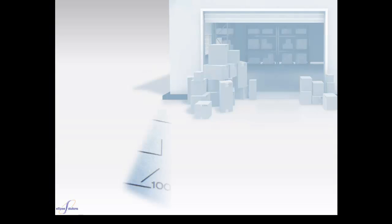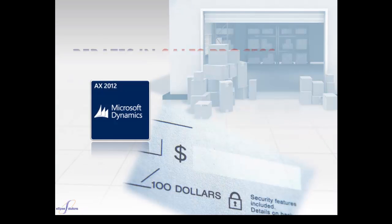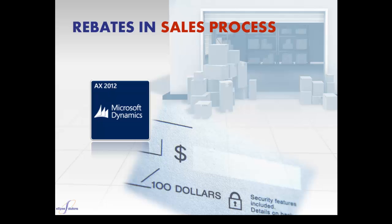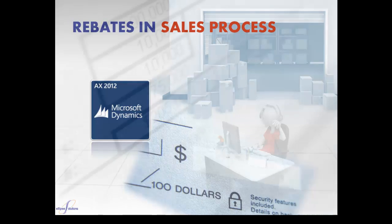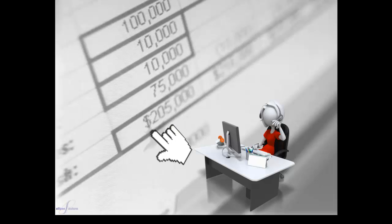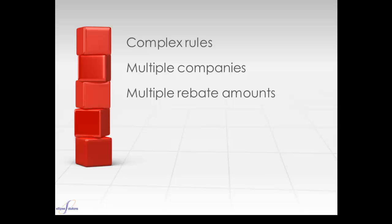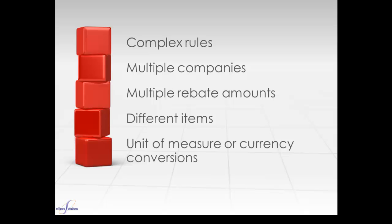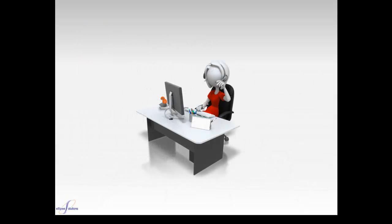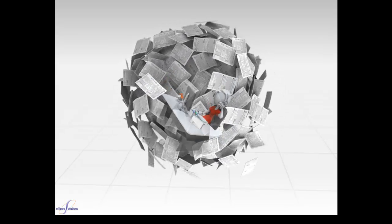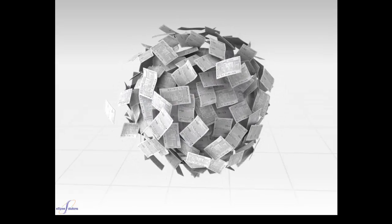In this example, Contoso is running Microsoft Dynamics AX 2012 and utilizes rebates in their sales process. The current process requires the administrator to manually review and adjust quarterly sales figures. This gets challenging when there are complex rules including multiple companies and multiple rebate amounts due for each different item. It gets even more complicated when there are unit of measure or currency conversions, and when more than one system is used, the manual processes can become tedious and overwhelming. In addition, the integrity of the data can be questionable.